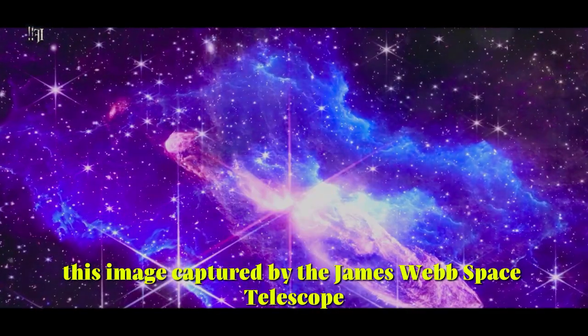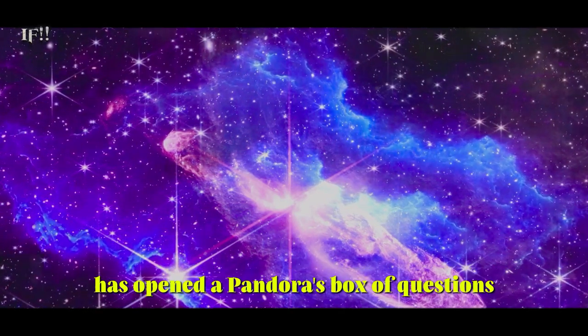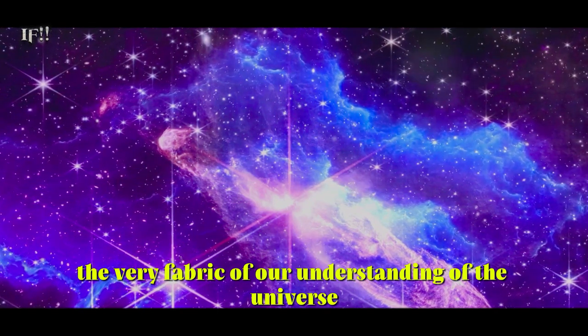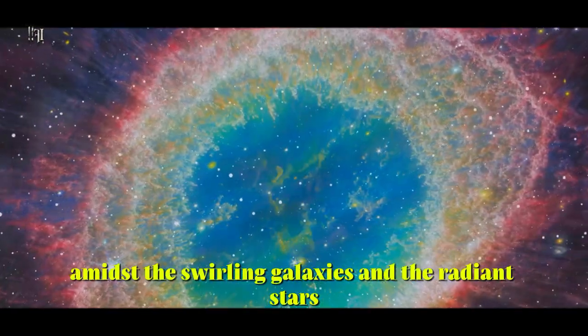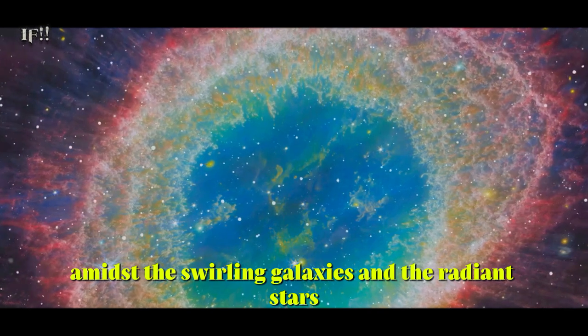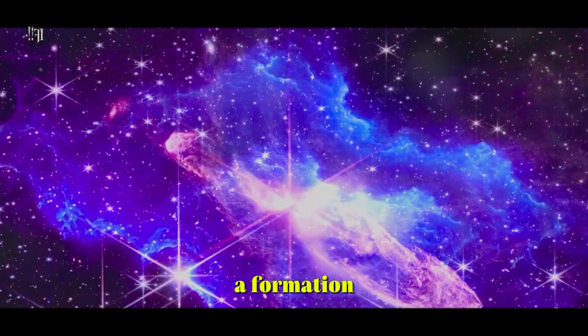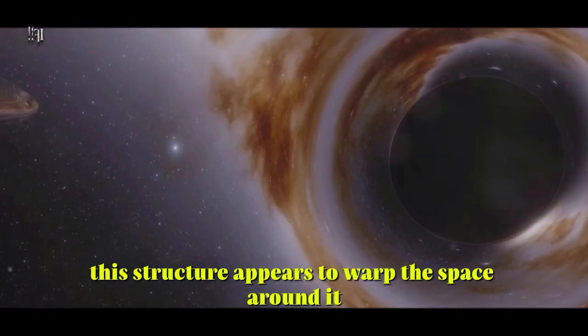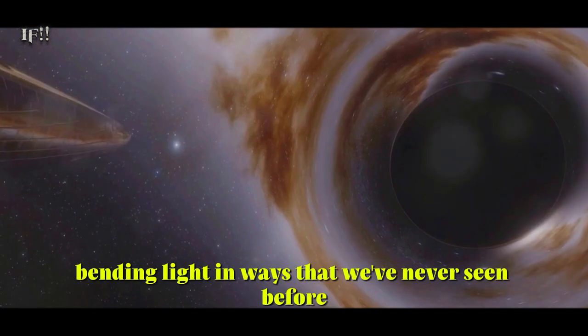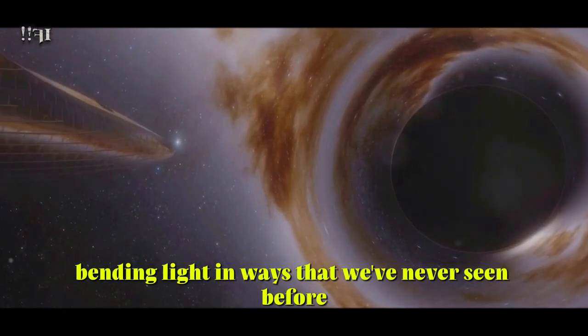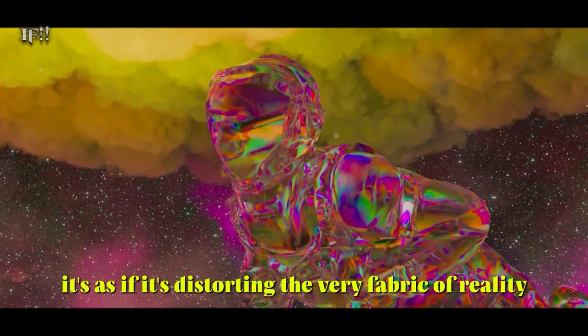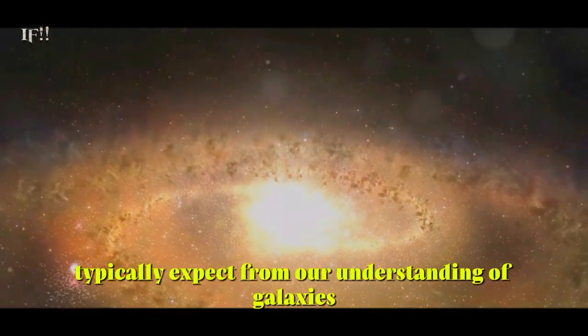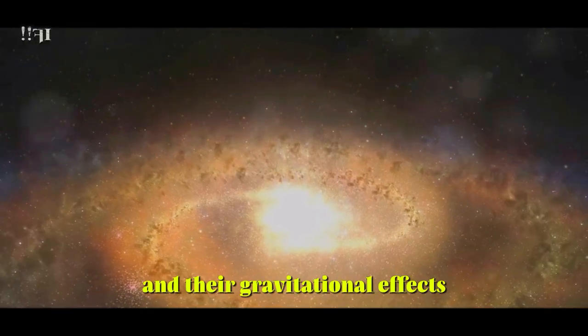This image, captured by the James Webb Space Telescope, has opened a Pandora's box of questions, challenging the very fabric of our understanding of the universe. In the heart of this image, amidst the swirling galaxies and the radiant stars, lies an unexplained phenomena, a formation, a structure that defies our current understanding of the cosmos. This structure appears to warp the space around it, bending light in ways that we've never seen before. It's as if it's distorting the very fabric of reality, acting as a cosmic illusionist.